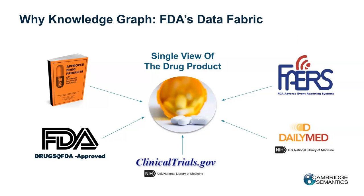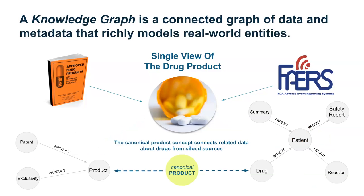We're able to answer questions across these different siloed data sources, creating a single view of the drug product. You can see many different applications that have full databases behind them, and many questions that need to be answered. The data is in each one of these different applications and it's very difficult to combine and link it together accurately. Here's an example using two databases — the approved drug products and the FDA adverse event reporting system — showing a simple example of how to link those. We automatically can create the ontology from those data sources.